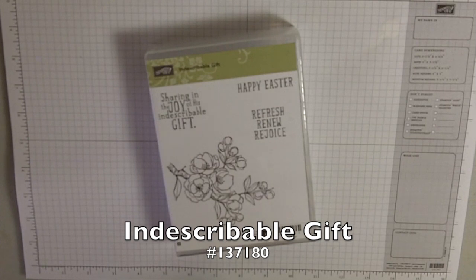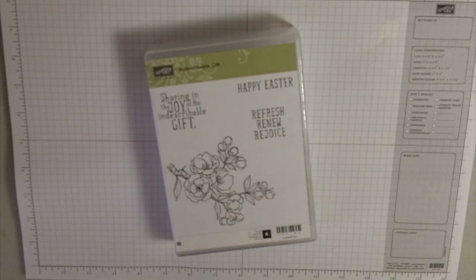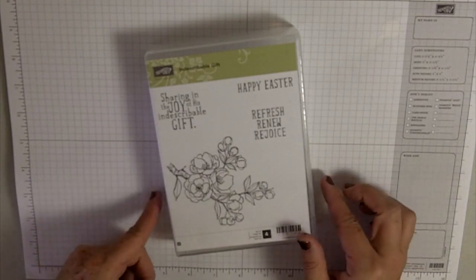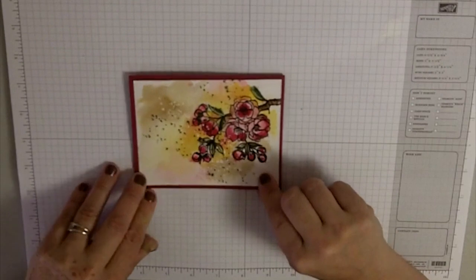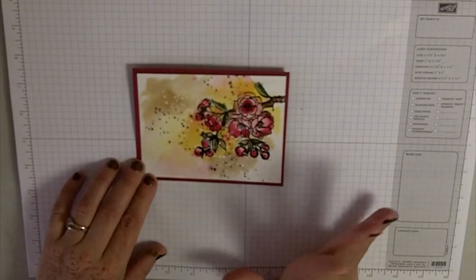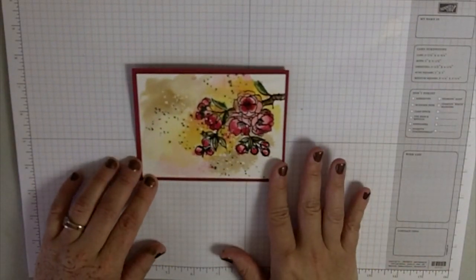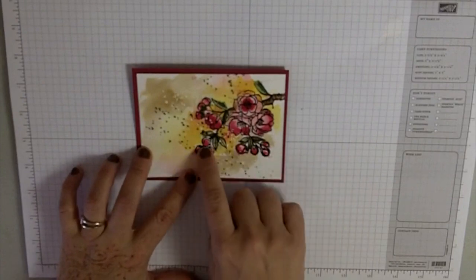This is called Indescribable Gift and it's in our mini catalog right now. With Easter coming, I'm thinking of spring. We've had a tough winter, so I'm all ready to get going. Let me show you what the card's going to look like when we're done.